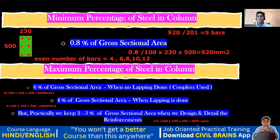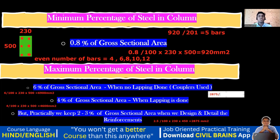Now, how many 16 mm diameter bars satisfy 2,875 mm²? Area of one 16 mm bar is 201 mm². Dividing 2875 by 201 gives 14.3, which rounds up to 15. Since 15 is odd, we go to the next even number, which is 16 bars.